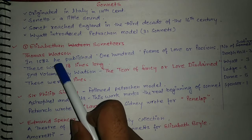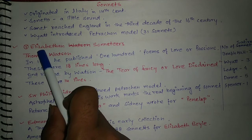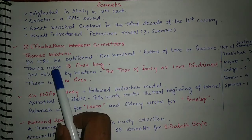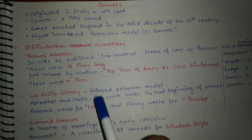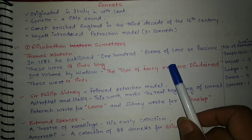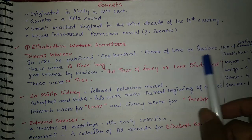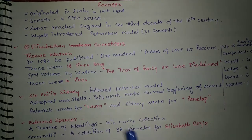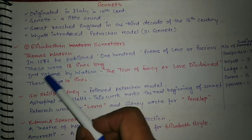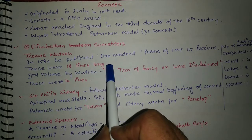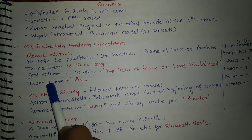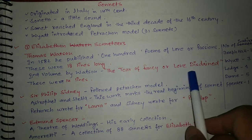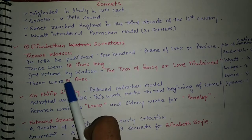We can categorize sonnets in this period. First is the Elizabethan sonnet. Thomas Watson in 1582 published 100 poems of love, called Passionate Century of Love — these were 18 lines long, which is a specific thing to remember about Watson. His second volume, The Tears of Fancy or Love Disdained, was in 14 lines.